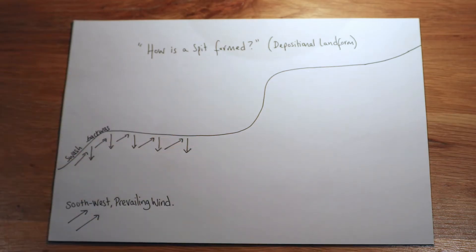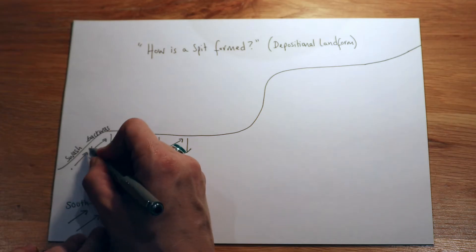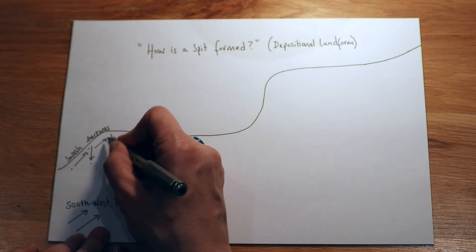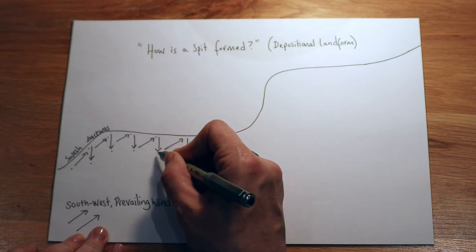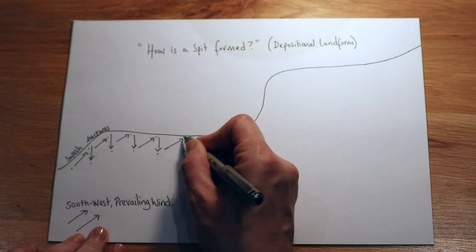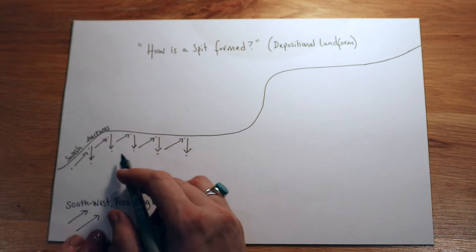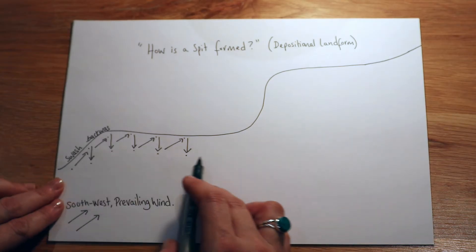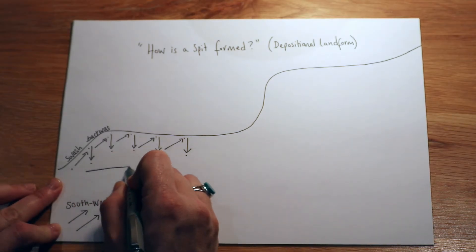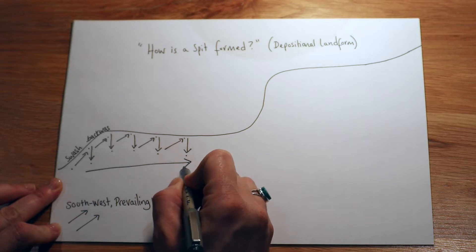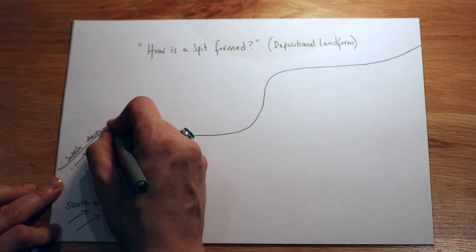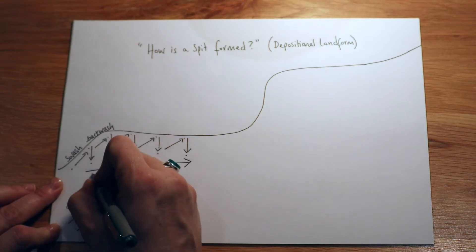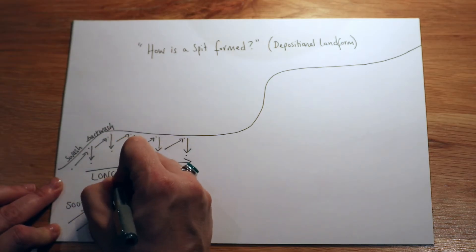Now I want you to imagine a small piece of sediment — like a pebble — making its way along the beach with the waves, and with gravity coming back down the shore, all the way along. Its journey means that it's moving in this direction. This process of that piece of sediment moving with swash and backwash is what we call longshore drift.